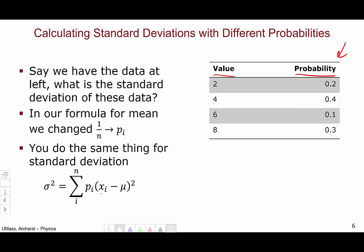So now, this equation says, take each event, subtract the mean, square it, multiply by the probability, and add them all up. And that will give you the standard deviation squared.